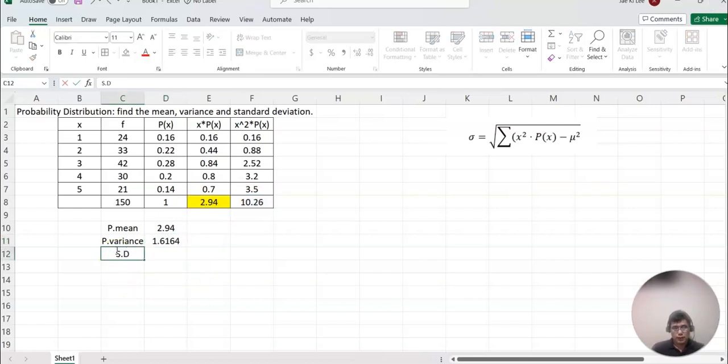Then the standard deviation equals the square root of the variance. This is the value.